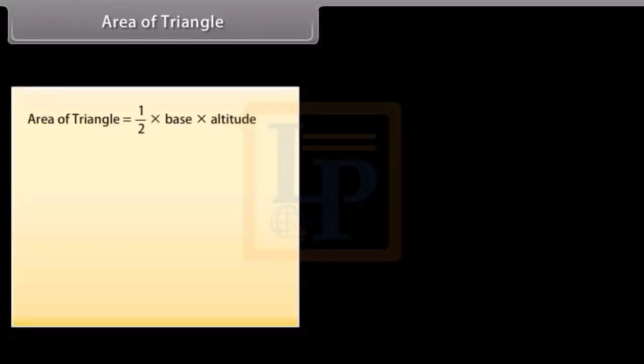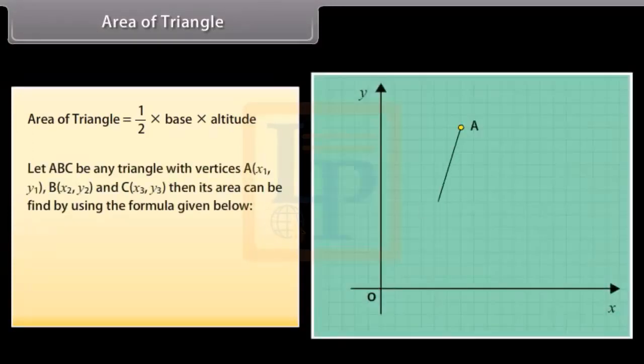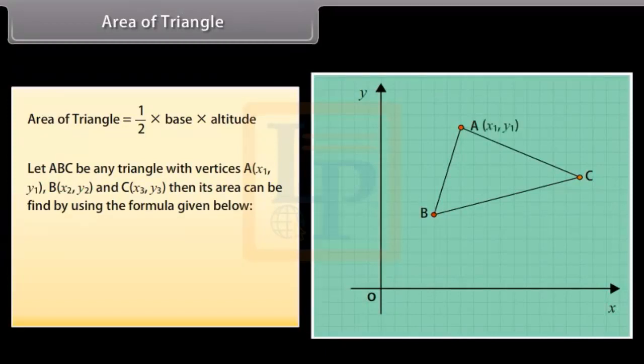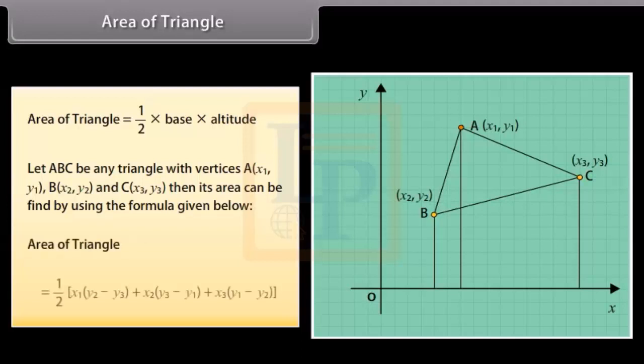Area of triangle. In earlier classes, when the base and altitude of triangle is given, then we find its area by using the formula area of triangle is equal to 1 by 2 into base into altitude. Let ABC be any triangle with vertices A(X1,Y1), B(X2,Y2), and C(X3,Y3). Then its area can be found by using the formula given below. Area of triangle equals 1 by 2 into X1 into Y2 minus Y3 plus X2 into Y3 minus Y1 plus X3 into Y1 minus Y2.